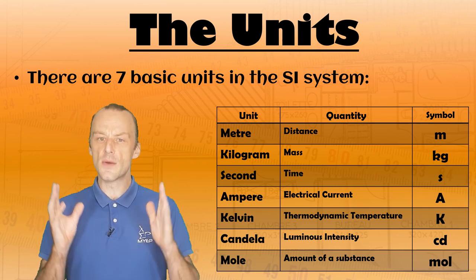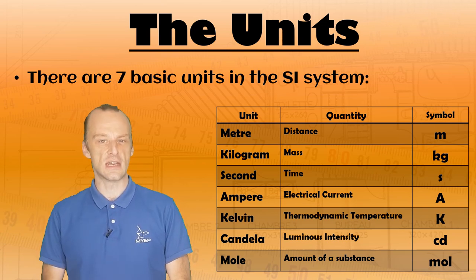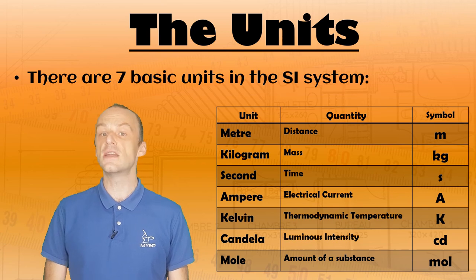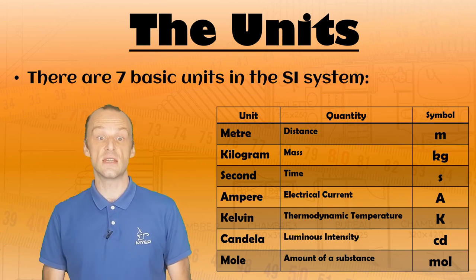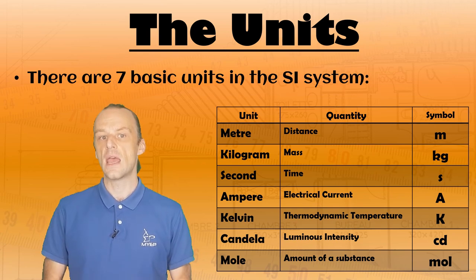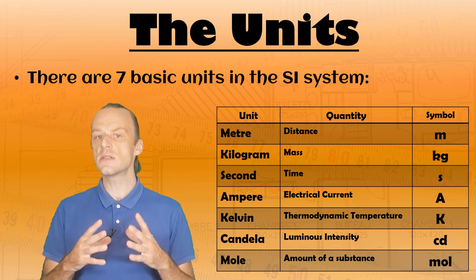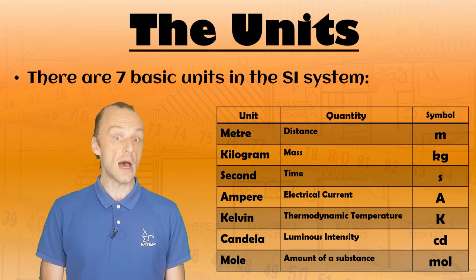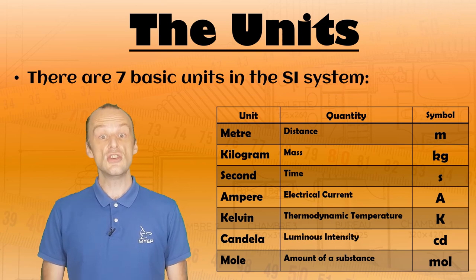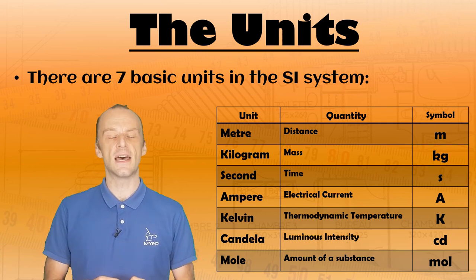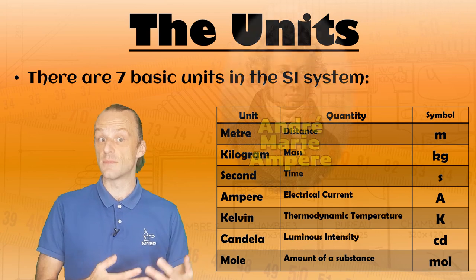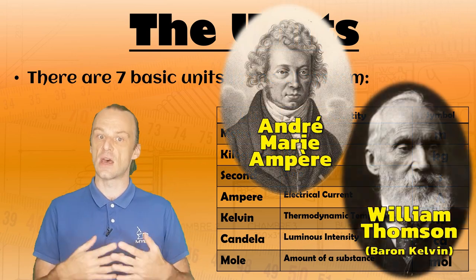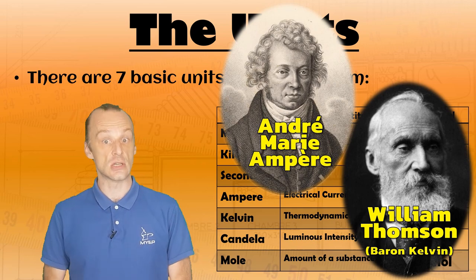Don't worry if you're not familiar with all those units just now, but with only those seven units, we can calculate just about everything we need to know about the world. Each unit has its own symbol, which could be one or more lowercase or uppercase letters. A unit uses an uppercase letter if it's from someone's name, so there actually was a scientist called ampere and a scientist called kelvin, and so on.